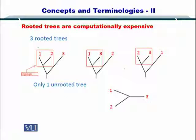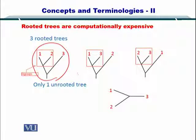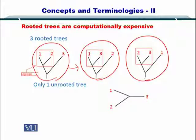For instance, rooted trees are computationally very expensive because one rooted tree can be represented in multiple forms. However, the unrooted tree can only be represented in a single form. Let's take an example — this rooted tree can be represented in different ways, but in the case of the unrooted tree, we only have one case.